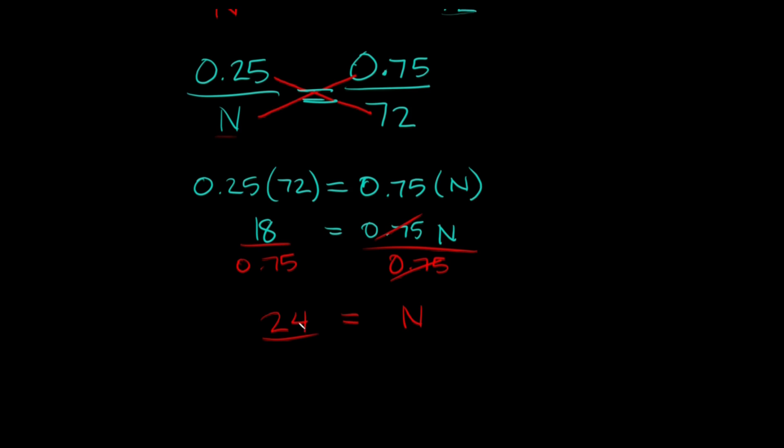So he ate 24 pieces and then he had 72 left right after he ate those 24 pieces. 72 is equal to what he had left. So in total we would have 24 plus 72, which is equal to 96 pieces. So that's how many pieces he had originally.